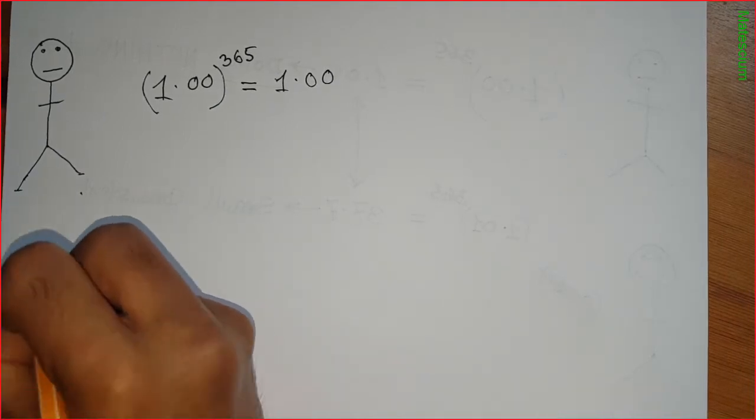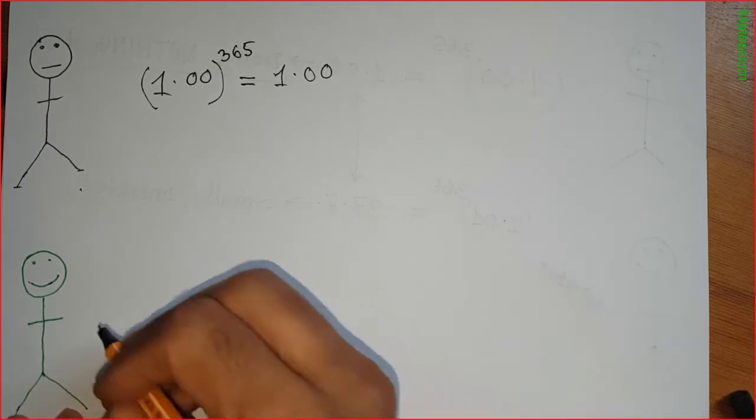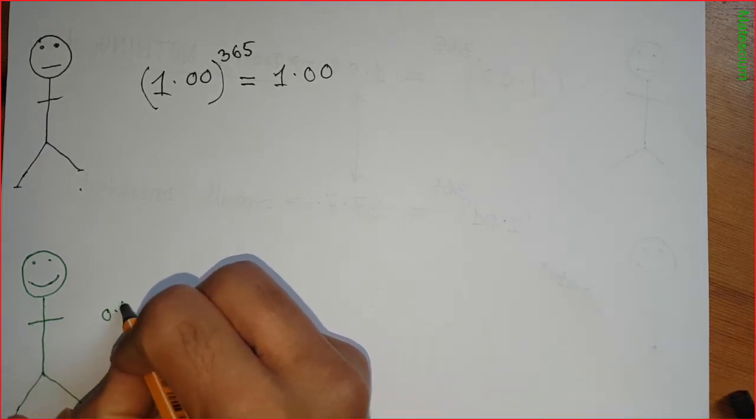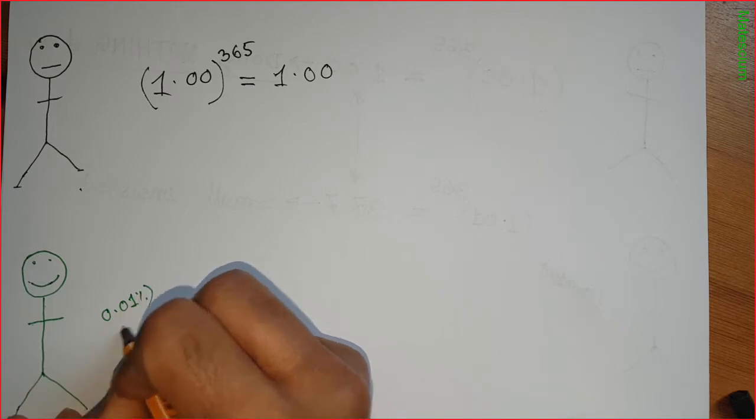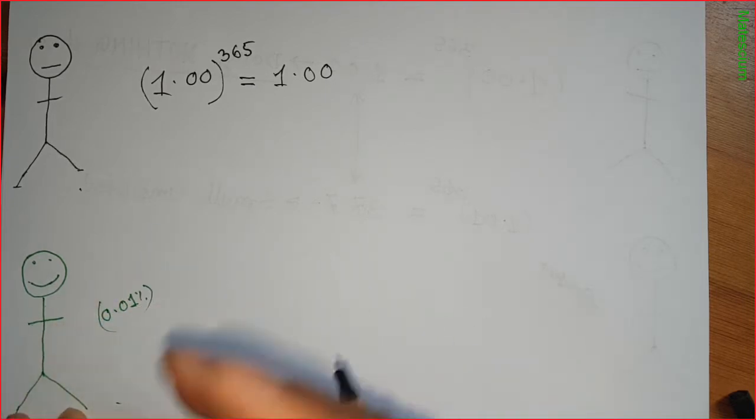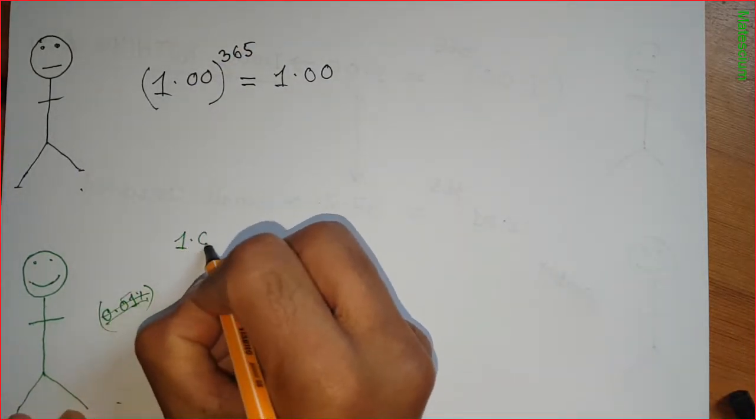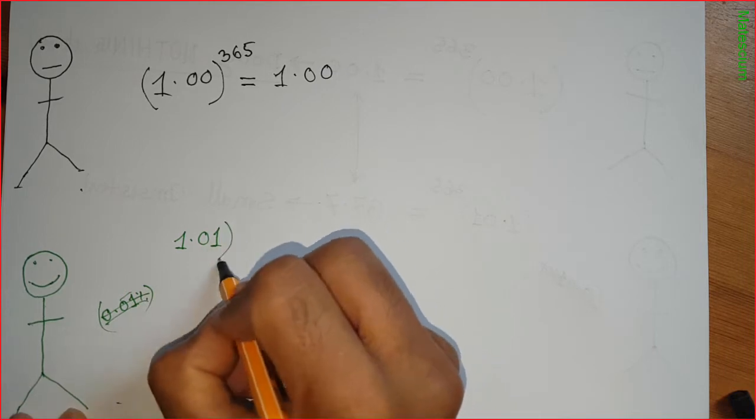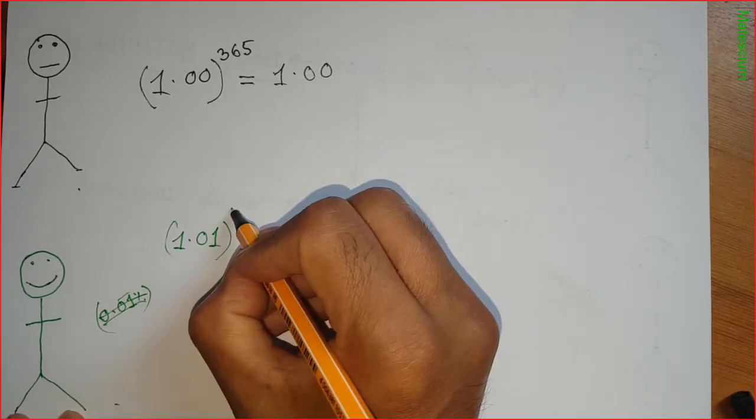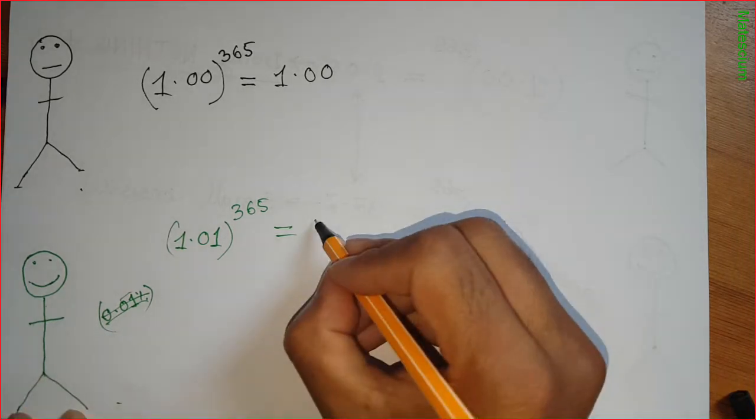On the other hand, let's consider another person. This person increases his effort every day in the amount of 0.01 percent. That means he or she increases effort 0.01 percent every day. So his base is 1.01, and after the end of the year, or after 365 days, this person gets the result of 37.7.